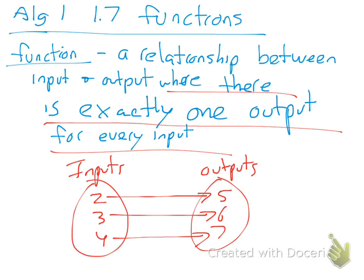It means that every time I put a 2 in, it's going to go to a 5. If I put a 3 in, it will go to a 6. If I put a 4 in, I go to a 7. Here's the thing: I can put in 2 a thousand times, but that 2 will always lead me to a 5.